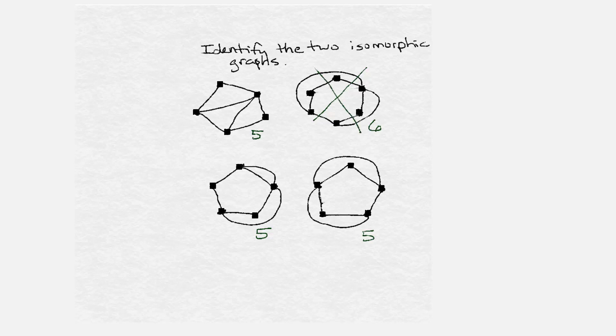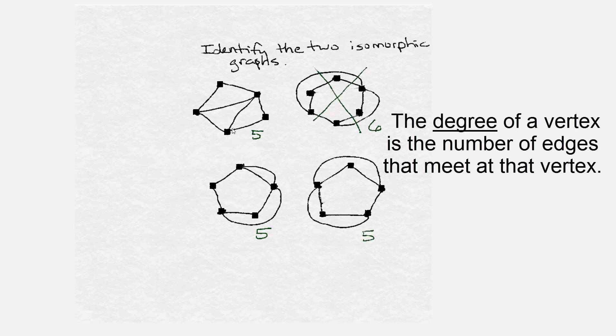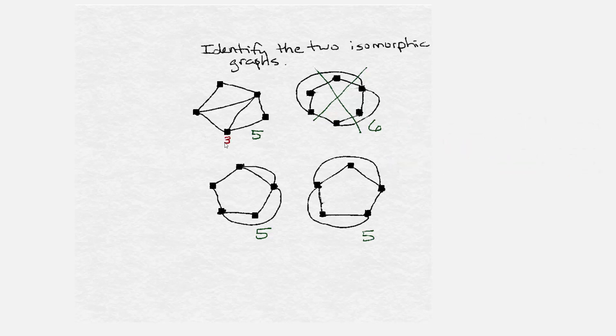Next, we're going to look at the degrees of each of the vertices on each of the graphs. Starting with the first graph, remember, the degree of the vertex is the number of edges that touches the vertex. So we have a vertex of degree three, another vertex of degree three, a vertex of degree two, a vertex of degree four, and another vertex of degree two.